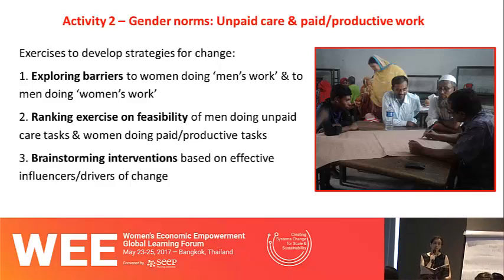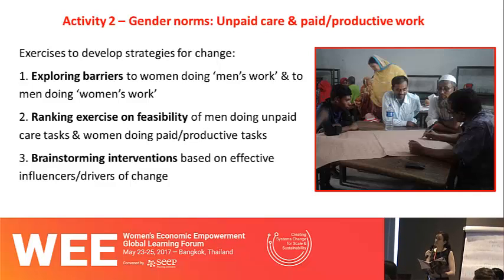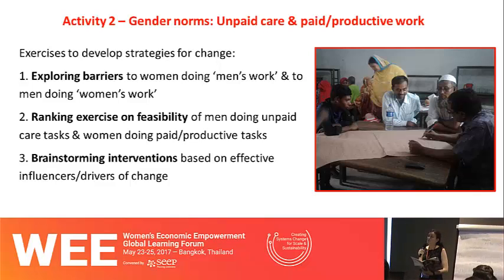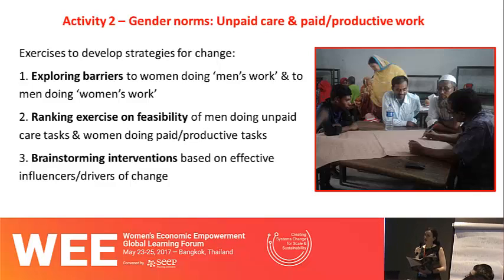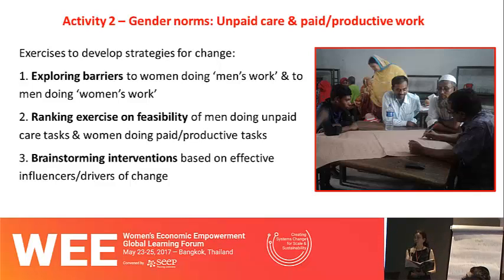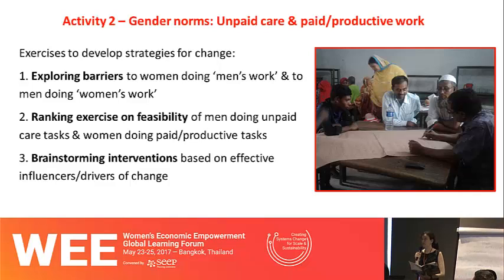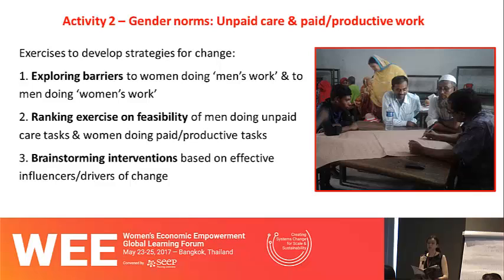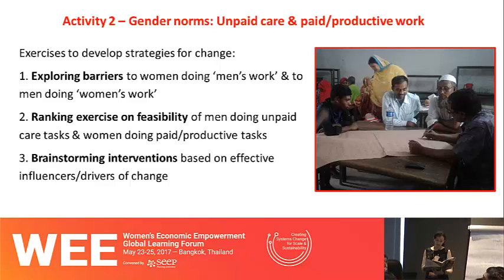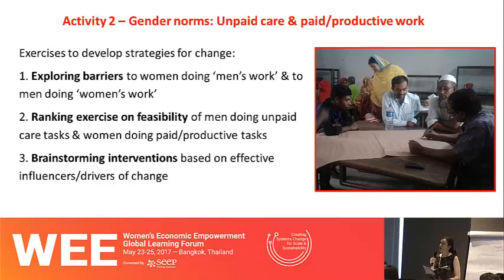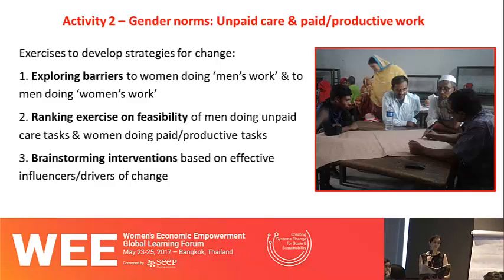The second part of this activity looked at gender norms relating to unpaid care and paid and productive work, focusing on developing strategies for change. The first part explored barriers to women doing what was perceived as men's work — often paid and productive work — and barriers to men doing what was seen as women's work, often unpaid care work. We then did a ranking exercise on the feasibility of men doing unpaid care tasks traditionally seen as women's, and women doing paid and productive tasks seen as men's work, to identify which tasks would be easiest to shift norms around, followed by brainstorming interventions based on effective influences and drivers of change.